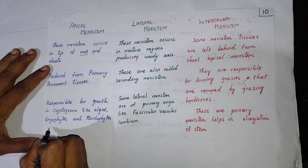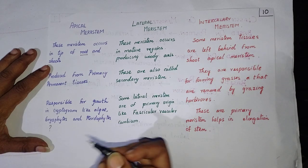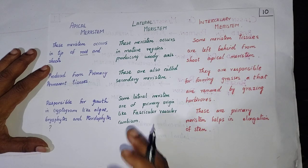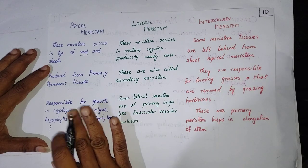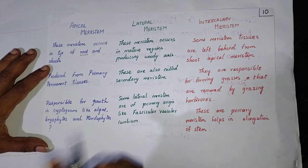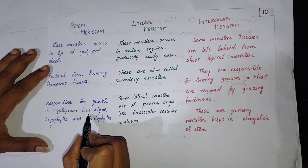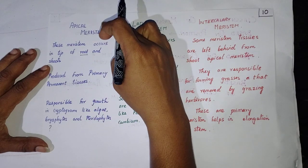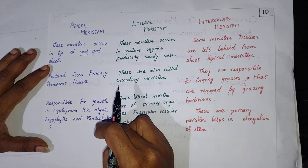Now you may have a doubt — does the apical meristem not allow growth in phanerogams? Yes, it does allow growth in phanerogams also, but the cryptogams depend mainly on the apical meristems for their growth and development.